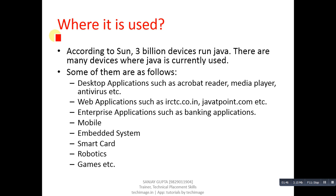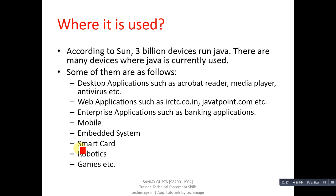Now, where is Java used? It is very important to know where we can apply the Java programming language. According to Sun, 3 billion devices run Java. Currently Oracle has the rights of Java — earlier it was with Sun, the company which originally developed Java programming language.